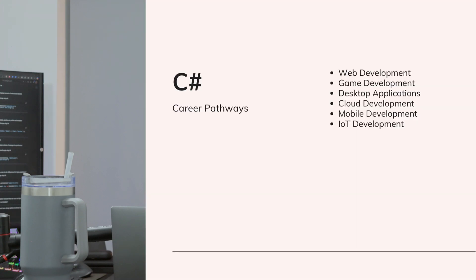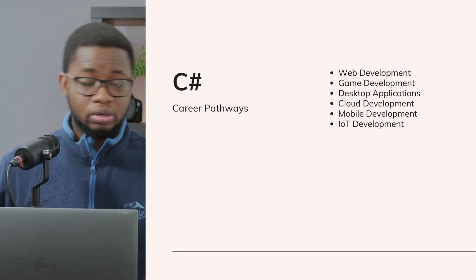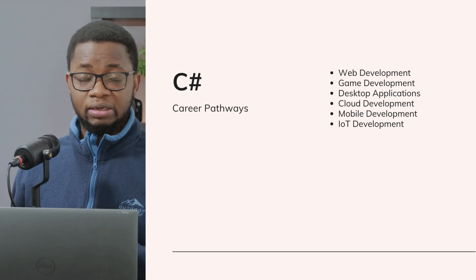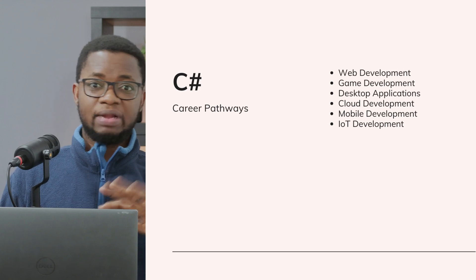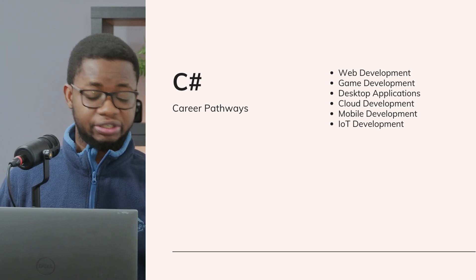C# is like the one ring to rule them all — the pathways available to you as a C# developer are many. First, you can be a web developer, using tools like ASP.NET Core to build modern websites and APIs, creating web apps using repository patterns, units of work, and other nice frameworks to write robust web applications. You can also be a game developer — Unity is the platform to go to for building 2D and 3D games.